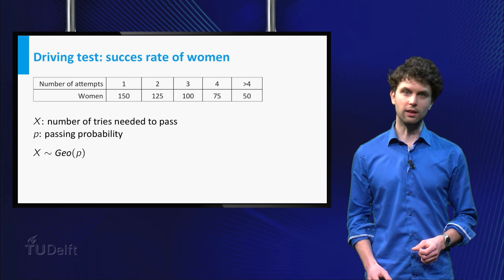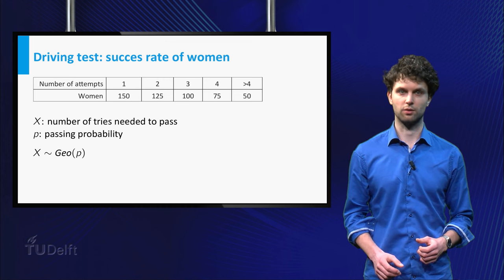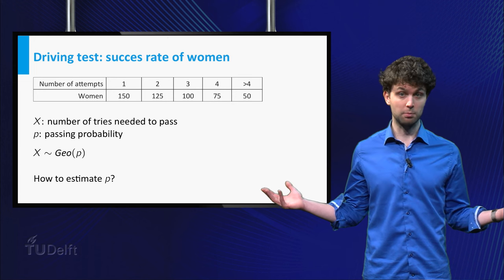The stochastic model we obtain with these assumptions is that X has a geometric distribution with unknown parameter P. Now, what would be a good estimate for P?